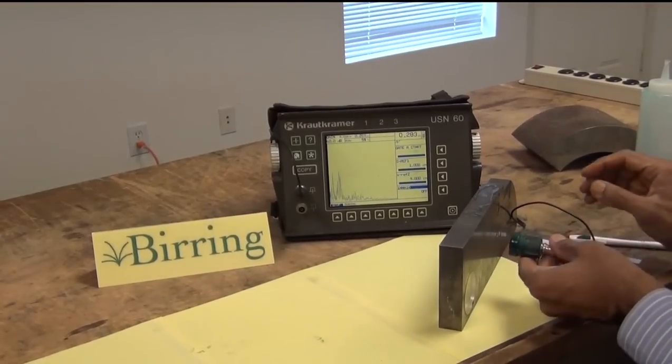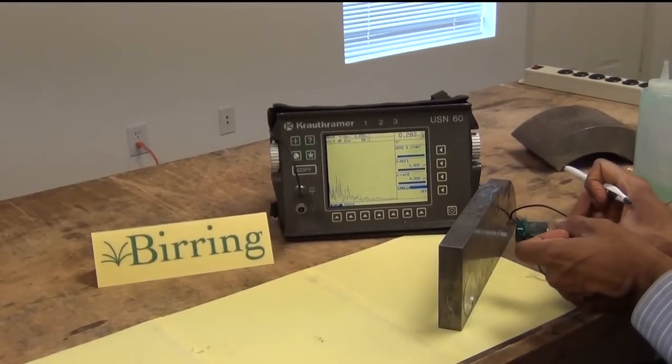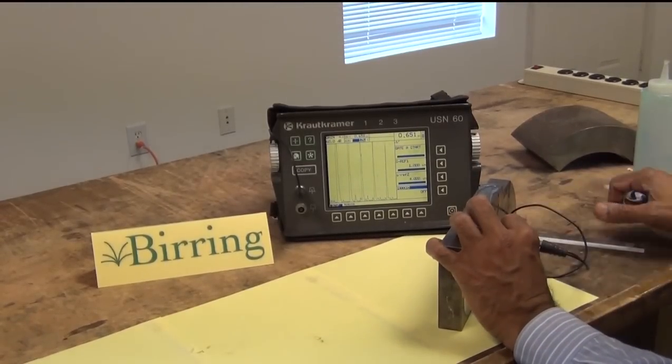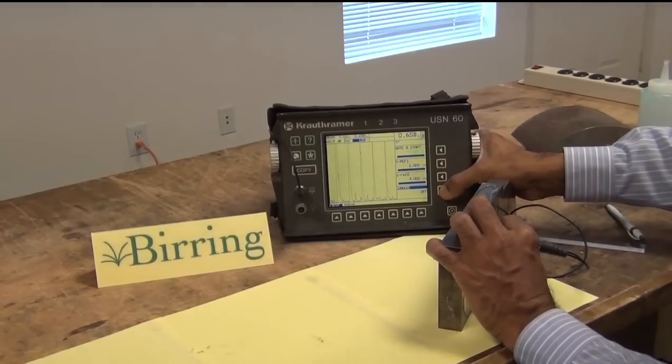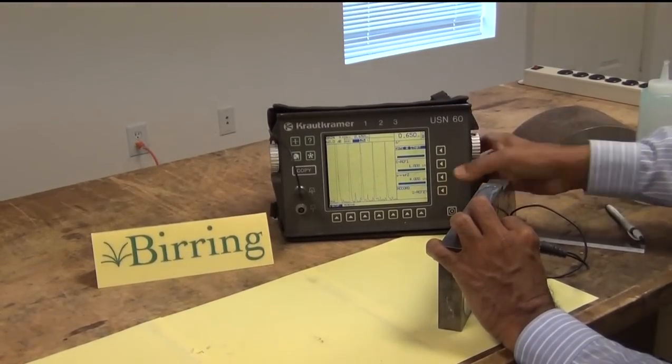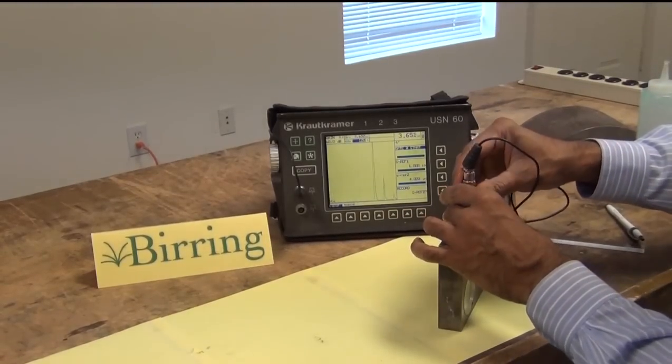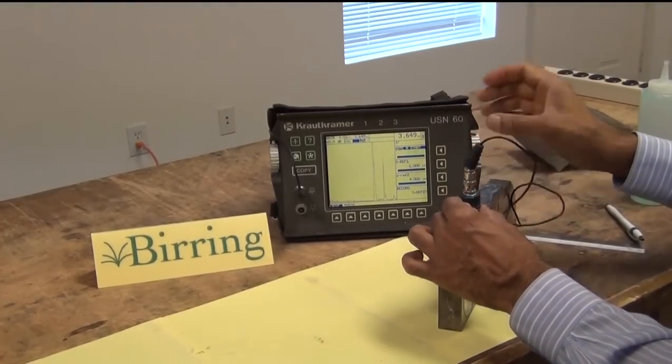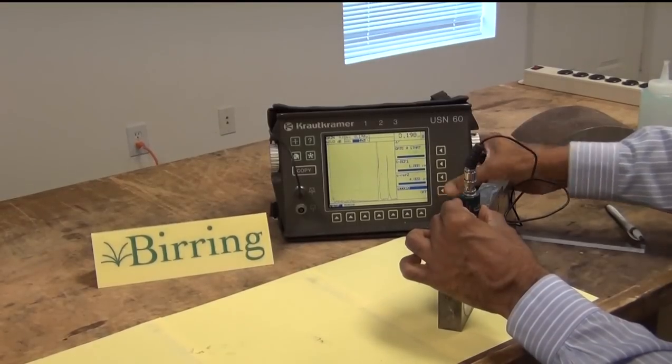We are ready to do the AutoCal. The two steps chosen are 1 inch and 4 inch. I will first put it on the 1 inch side and here is the signal from the 1 inch. We will start the recording process. Record S reference 1. Then it's asking for S reference 2 which would be here and that's 4 inches, and I will enter S reference 2 as 4 inches and we are done.